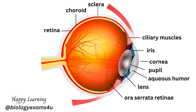The ora serrata is the serrated junction between the retina and the ciliary body. This junction marks the transition from the simple non-photosensitive area of the retina to the complex multi-layered photosensitive region.